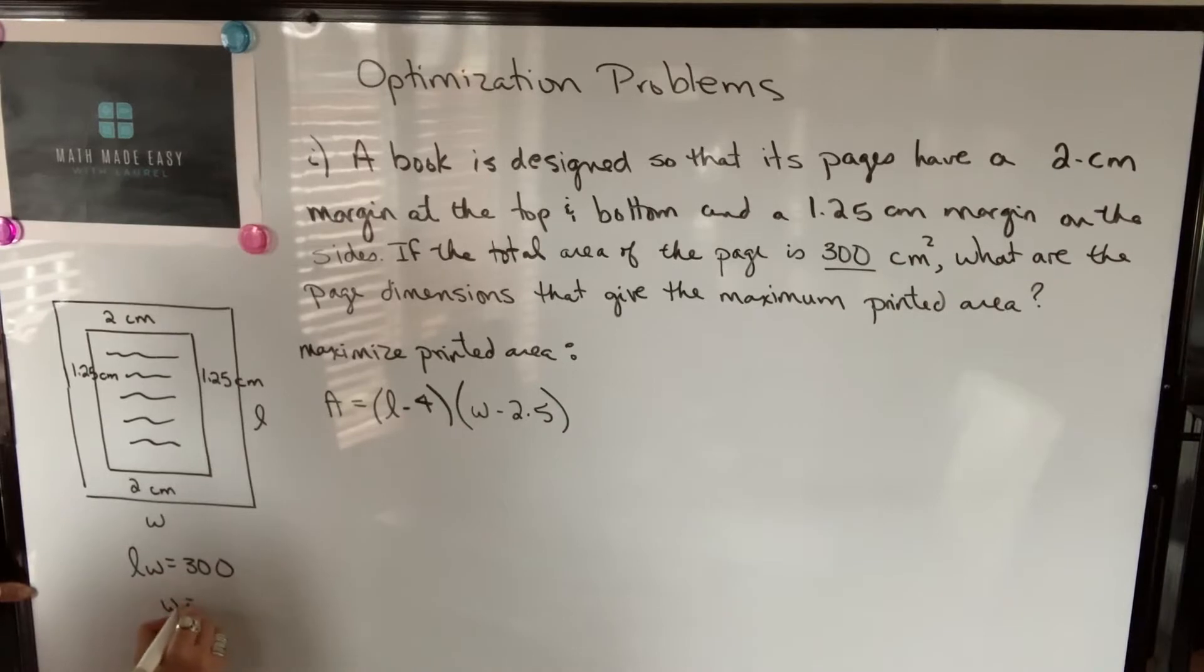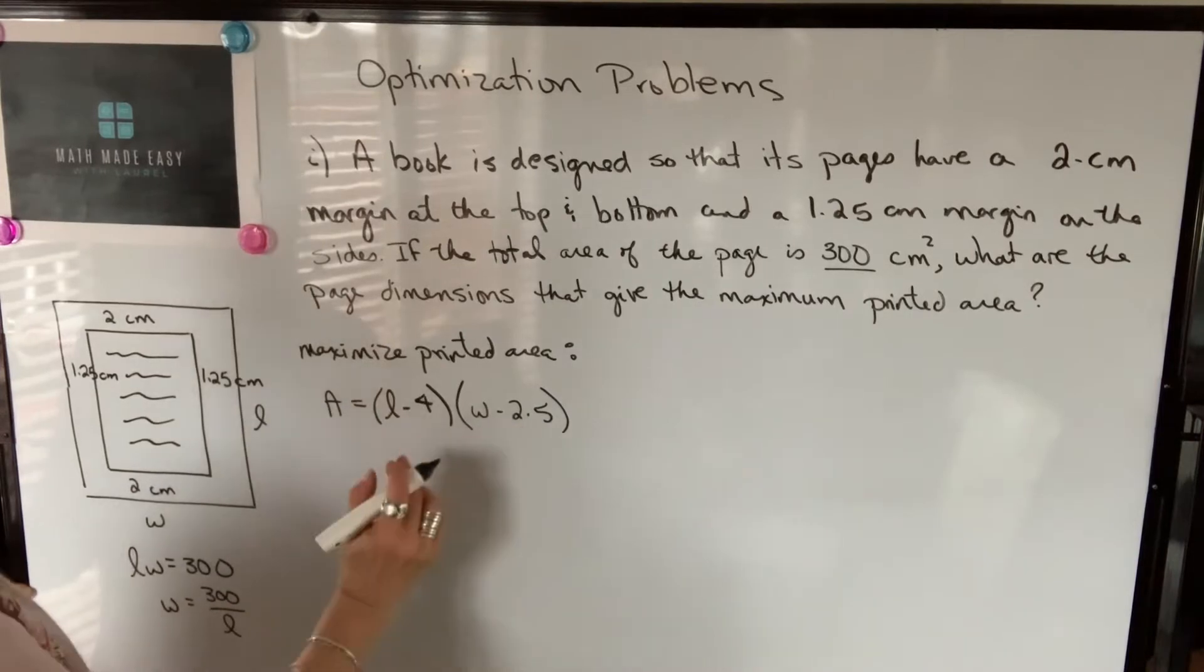So I can isolate either one of these variables. I will write W as 300 divided by L, and I'm going to put that in for W in my function.